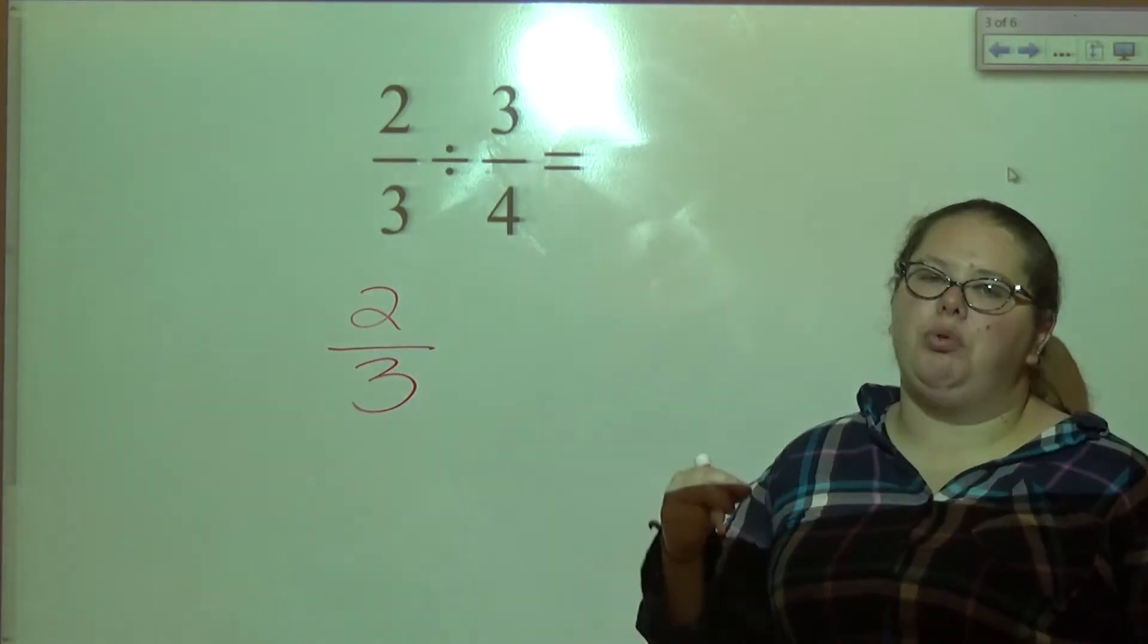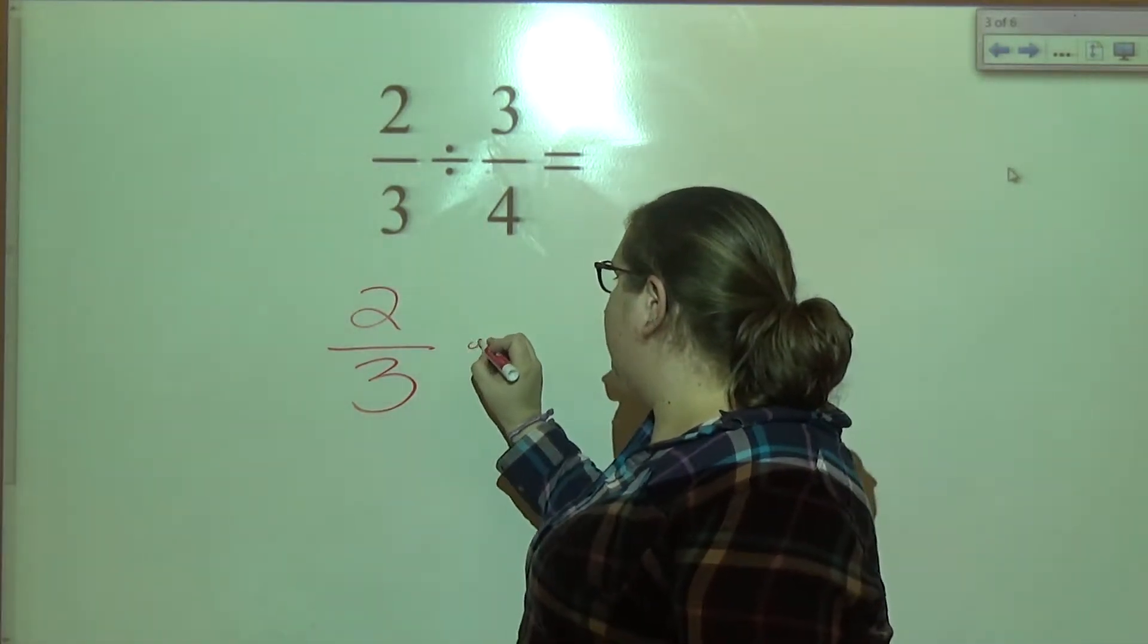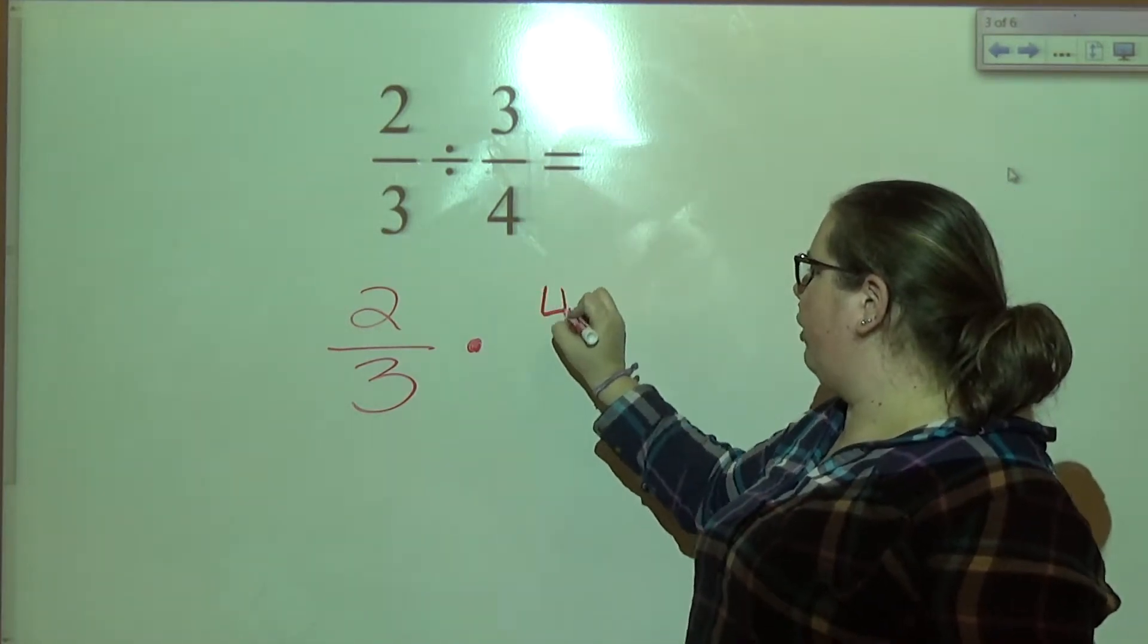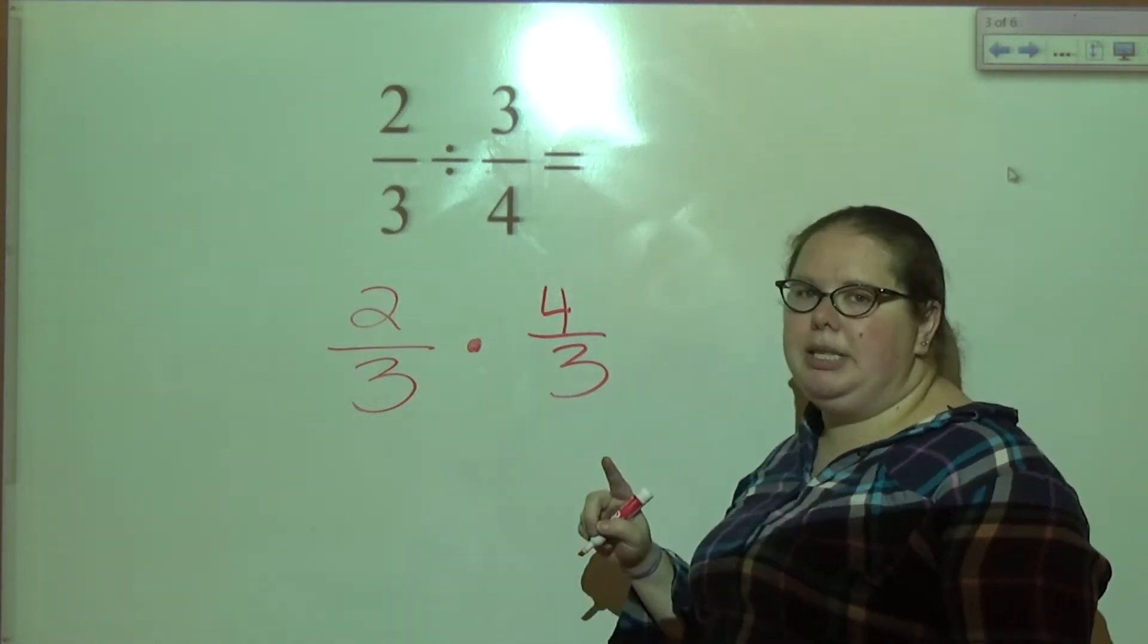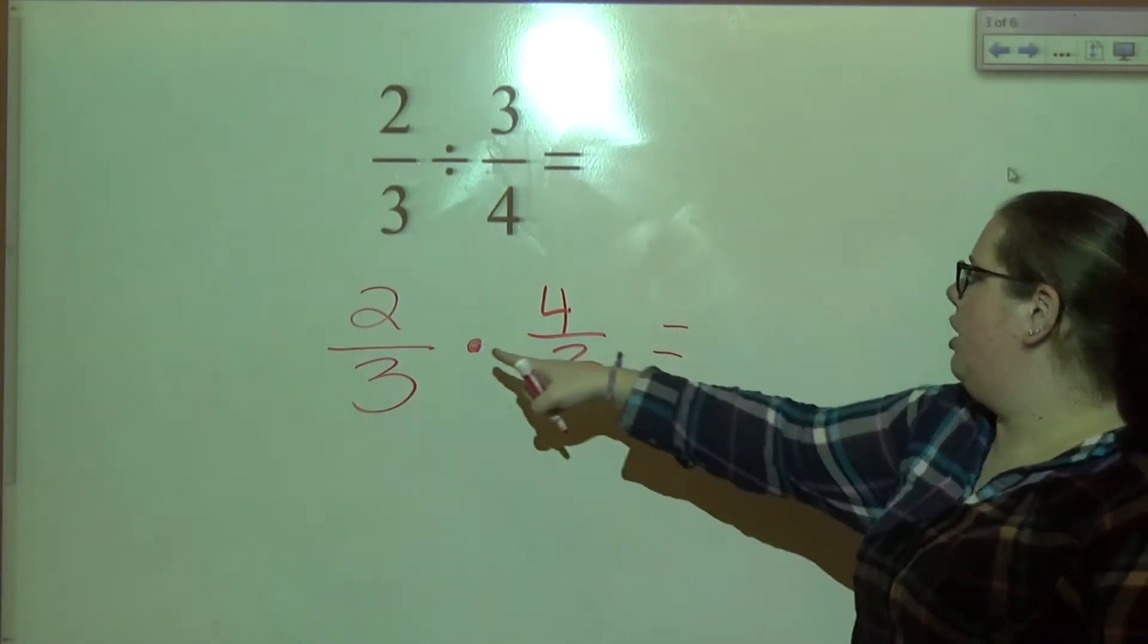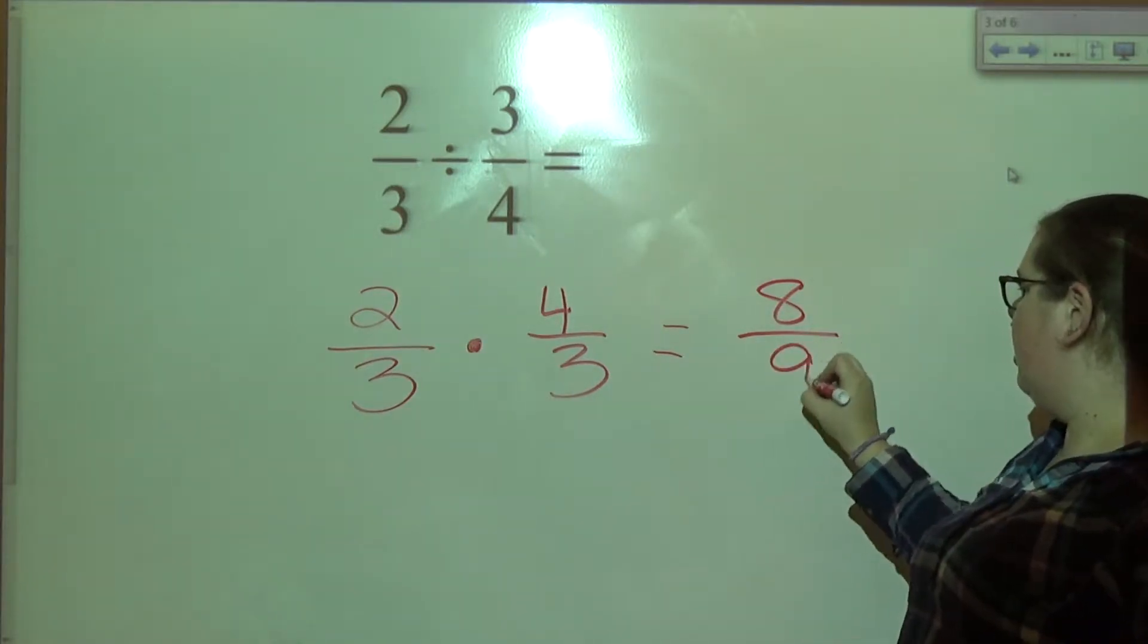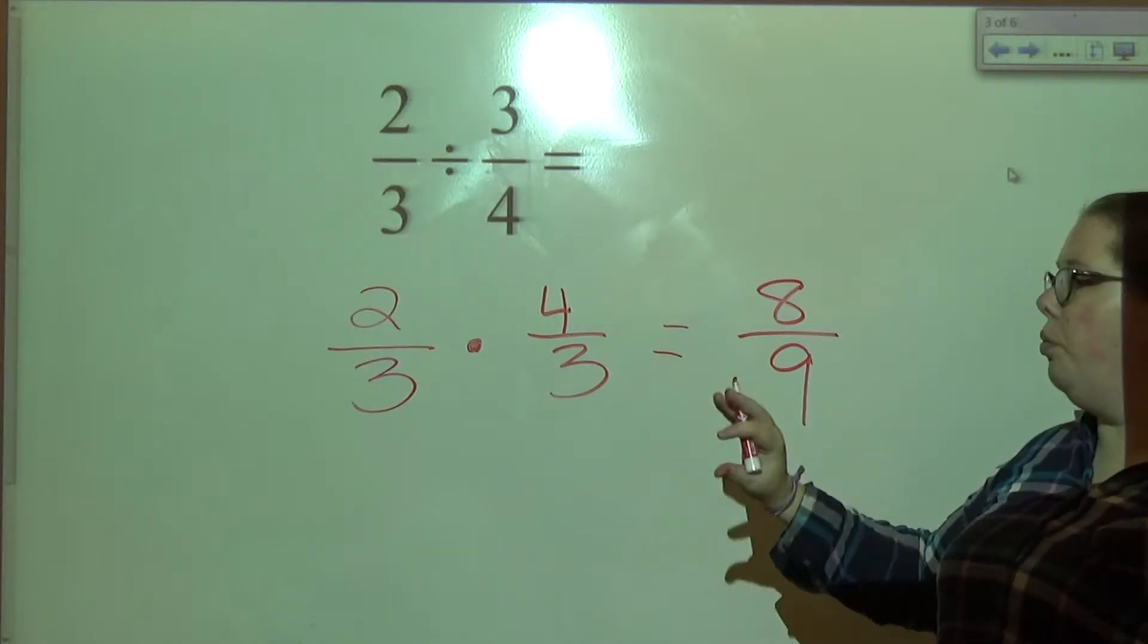We don't like division. We want to get rid of the division. Dividing is the same as multiplying by your reciprocal, times four over three. Take the reciprocal of the second fraction. Now that it's multiplication, multiply cross, not cross multiply. Two times four is eight. Three times three is nine. Can we simplify that? No, we cannot. We are finished.